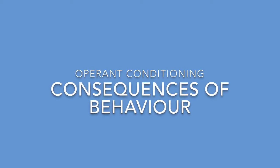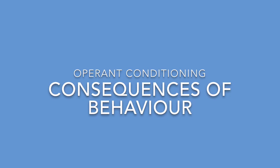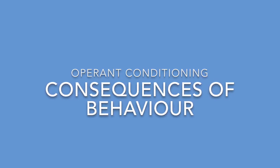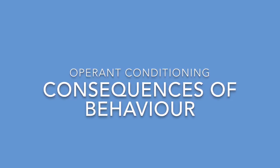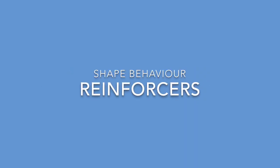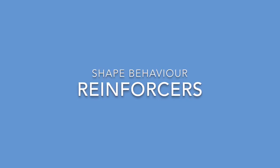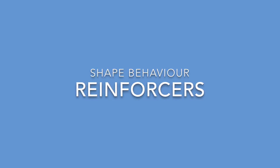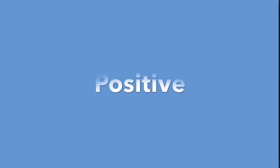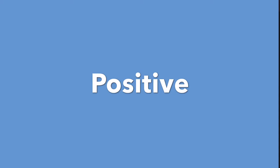So this is about operant conditioning and it's all about what happens after somebody has acted — in other words, the consequences of their behaviour. It will involve reinforcers which will be used to shape behaviours. A reinforcer by definition is anything that will increase the likelihood of that same behaviour occurring again. Positive reinforcement is receiving something you like in response to your behaviour, as long as that response increases the chance of you repeating that same behaviour.